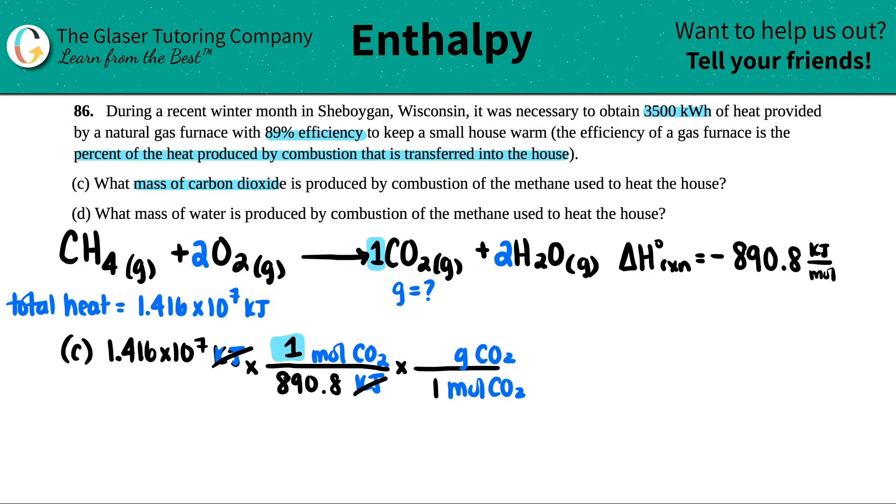So I got 12.01 plus 32, 44.01. Cancel out moles.